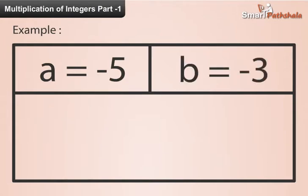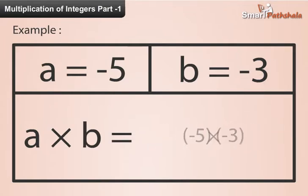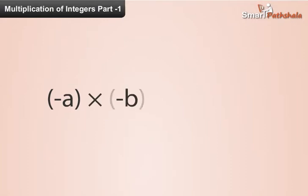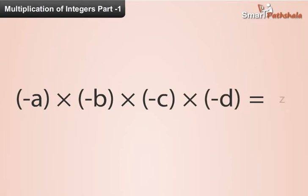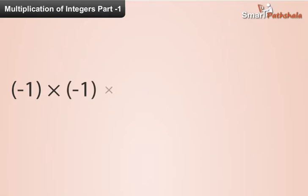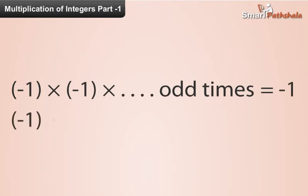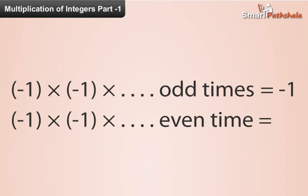Similarly, the product of three negative integers is negative, and the product of four negative integers is positive, and so on. If we multiply minus 1 an odd number of times, then the product is negative. If we multiply minus 1 an even number of times, then the product is positive.